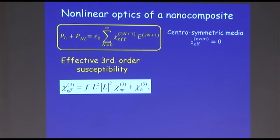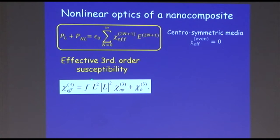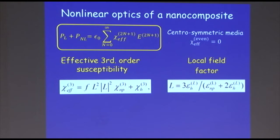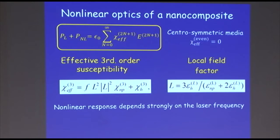Instead of talking in terms of susceptibility of the liquid or the particle, I will talk about the effective susceptibility of the composite. Chi-3 effective has two contributions: one from Chi-3 of the host (e.g., the liquid) and a contribution from the nanoparticles. Chi-3 of the nanoparticles involves the local field factor — the factor that depends on the dielectric function — and f is the concentration of particles per unit volume. The local field factor L depends very much on the frequency used and also on the amount of particles in the sample.